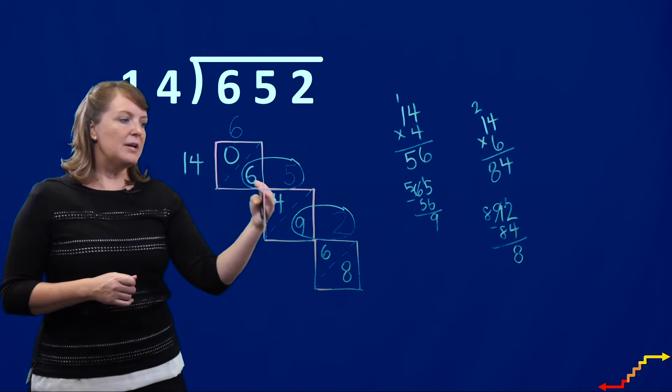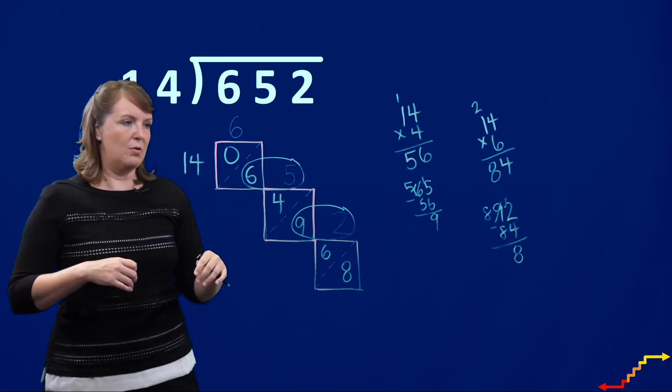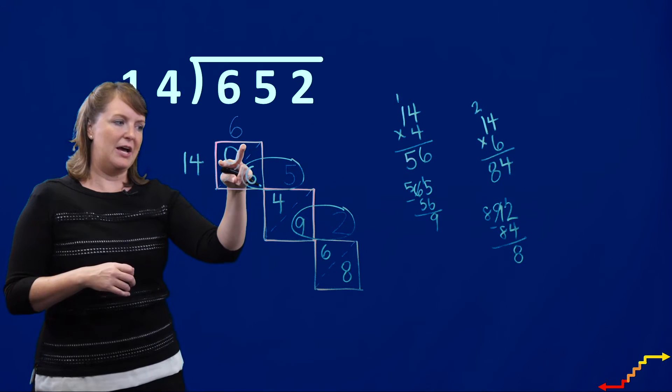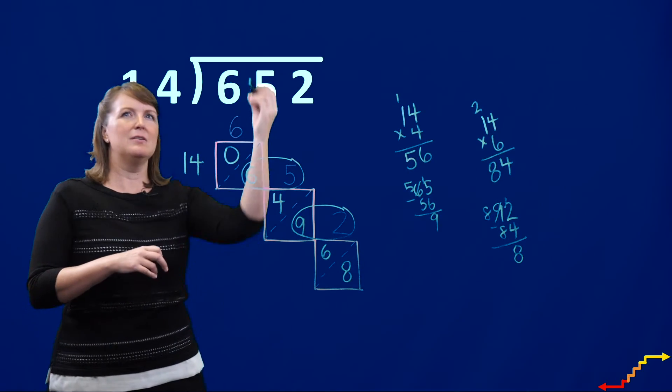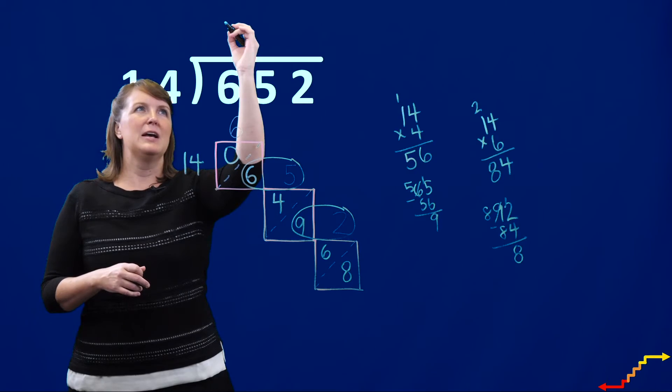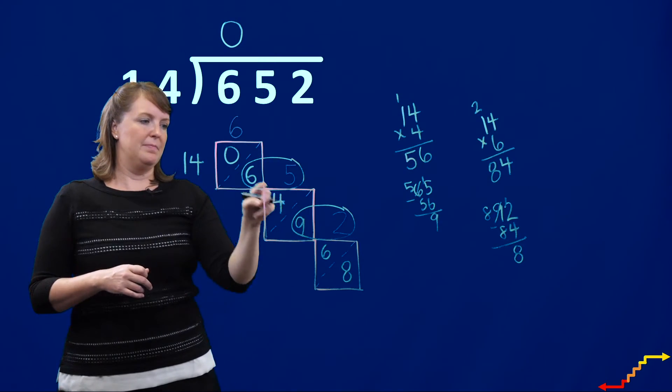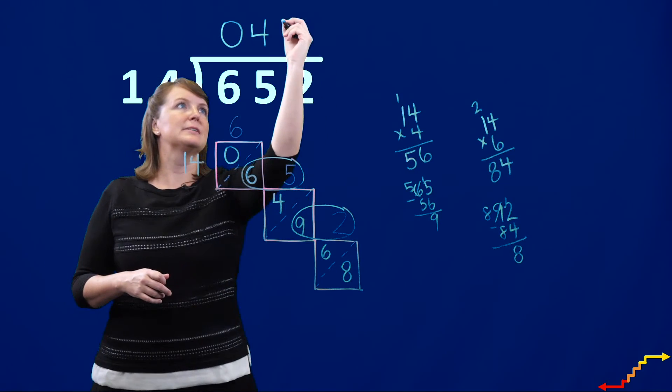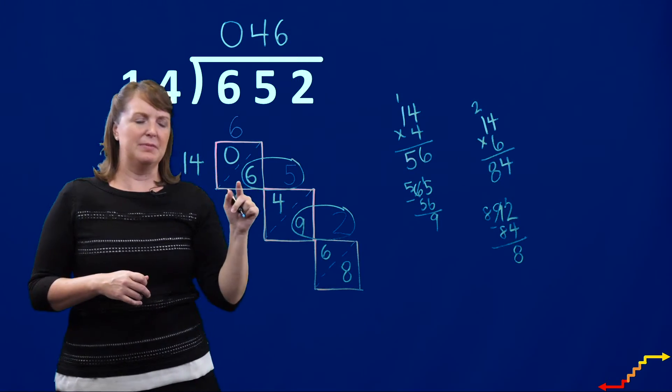So now it is time for us to figure out what our quotient is. We're going to look at the top parts of each lattice. So my quotient for this problem is, and I'll go ahead and write it up here, it's 0, 4, 6.